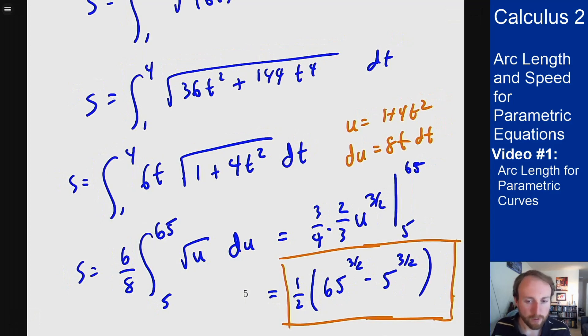We have another formula for it, x prime squared plus y prime squared, square root, and that lets us compute the length of these curves as well. Again the importance here is that I can now find arc length for curves that aren't written y as a function of x. If those lines are written parametrically I can use this new formula to figure out what the length of these curves are as well.